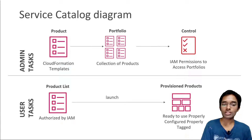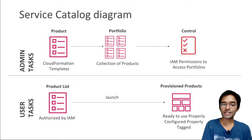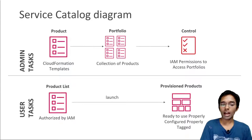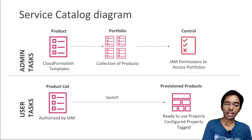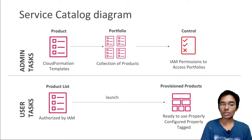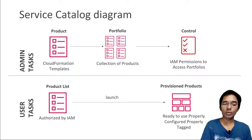Users are presented with a product list through the Service Catalog, and the products they see are only the ones they are authorized to access via IAM permissions. For example, if a user needs a stack with an EC2 instance, they will launch these products, and because the products correspond to CloudFormation templates, they will launch whatever the CloudFormation template is configured to do.